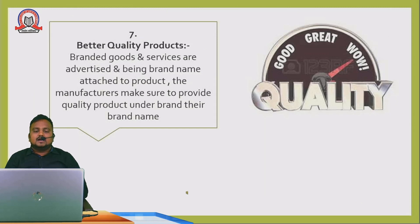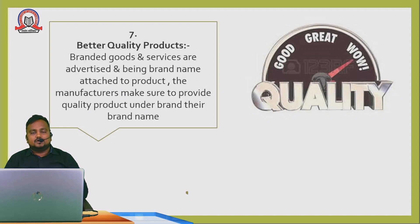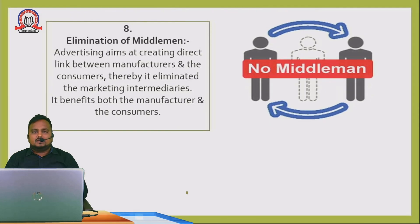Next is better quality of products. Branded goods and services are advertised, and being a brand name attached to a product, manufacturers make sure to provide a quality product under their brand name. The manufacturer maintains their brand by maintaining quality. For example, Johnson's Baby — they have advertised in people's minds that whenever a baby is born, they will use Johnson's Baby products. So advertisement leads to better quality of products.